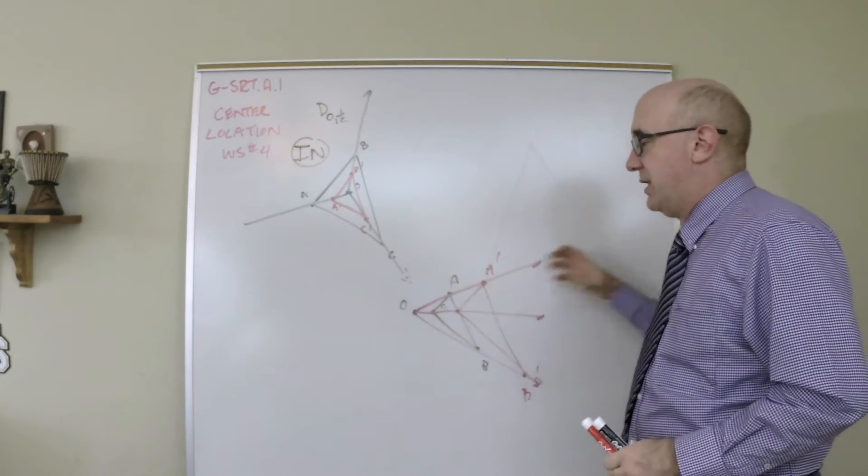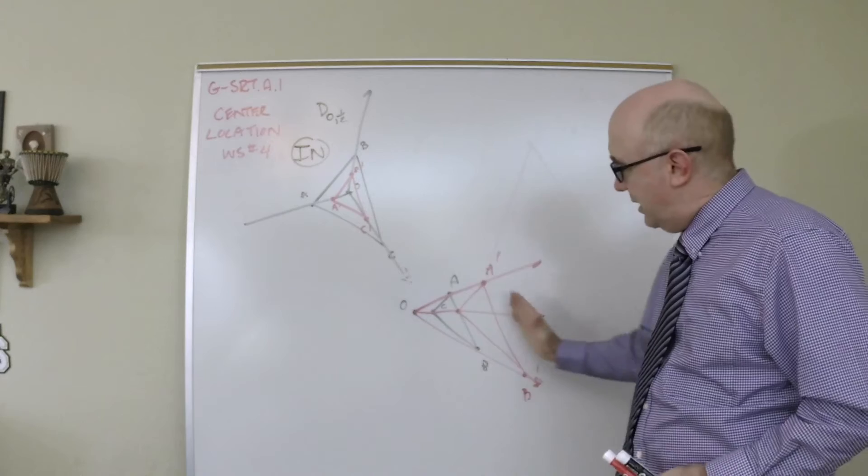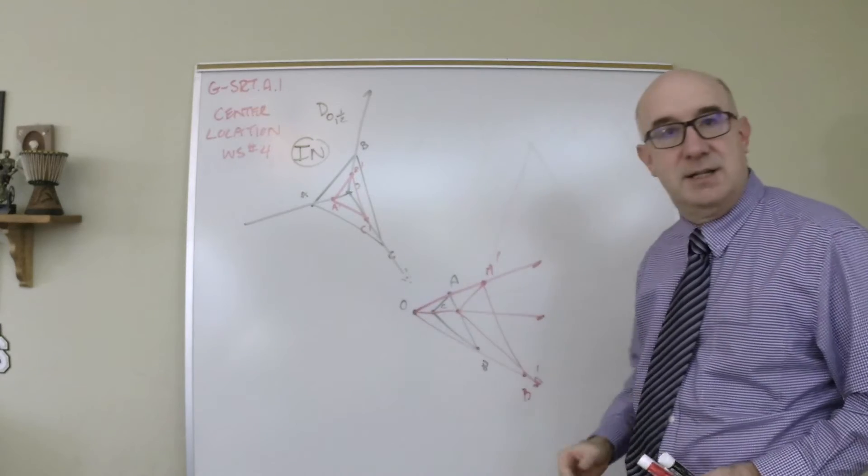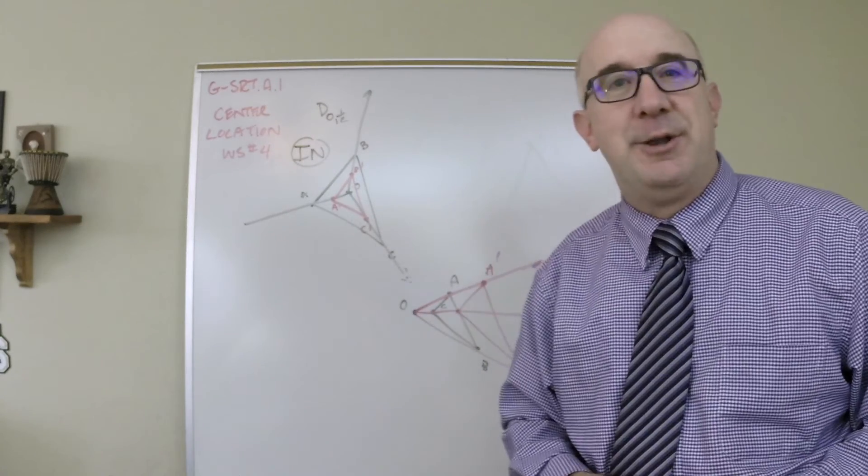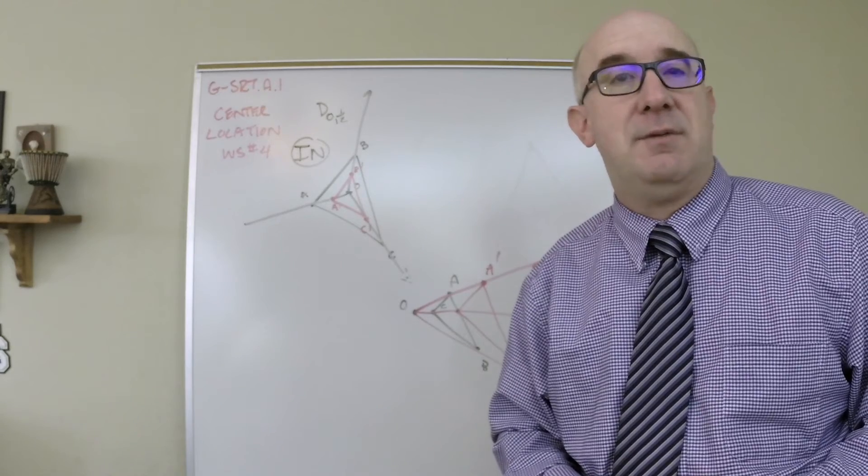And then again we form that secondary enlargement in this case, two times bigger, and you see it leave or get smaller. The key is those parallel lines and all of those proportions. We'll take a look at it on the computer now in an even better visual sense.